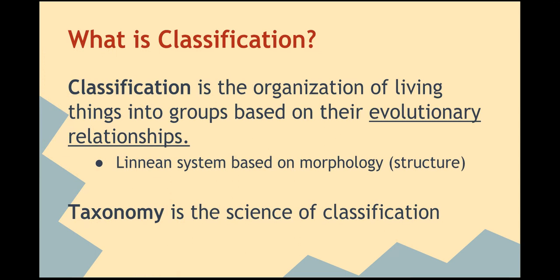Classification is the organization of living things into groups based on their evolutionary relationships. That's the modern definition, where today we base it on evolutionary relationships and use genetic information. The Linnaeus system was based purely on structures — what things looked like. Taxonomy is the science of classifying things.